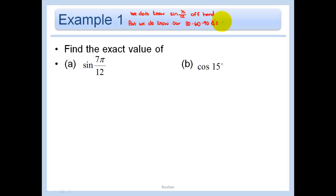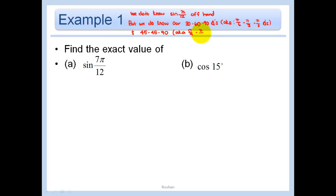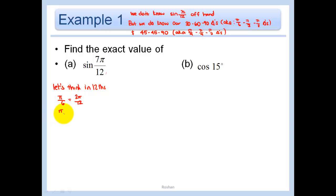But we do know our 30-60-90 triangles — that's π/6, π/3, π/2 in radians — and our 45-45-90 triangles — that's π/4, π/4, π/2. Since 12 is in the denominator, let's think in 12ths: π/6 becomes 2π/12, π/3 becomes 4π/12, and π/4 becomes 3π/12.